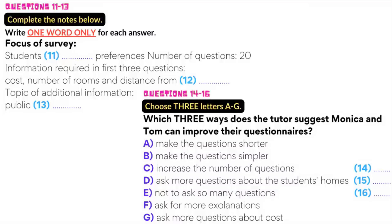So what's the survey about, Tom? It's about where students want to live and how they choose — basically their accommodation preferences. We've actually tried it out with a few students already. That sounds fine. So to start with, how many questions have you got? 20? Is that too many? Yes, it is, really. People get fed up answering lots of questions and they stop thinking about their answers.